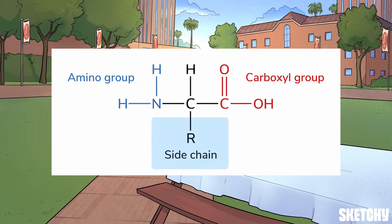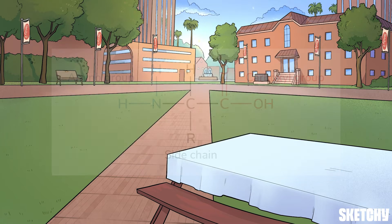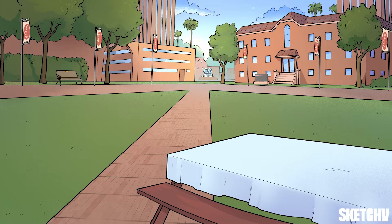That's the side chain that determines the amino acid's identity. When scientists want to make these molecules in the lab, there are two main methods they use: the Strecker synthesis and the Gabriel synthesis. You don't need to worry about memorizing every single bond that breaks and forms during these processes — just focus on the overall idea of each synthesis.